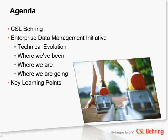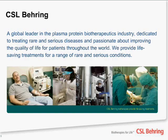CSL Behring is a global leader in our industry — a niche part of the pharmaceutical area where all of our products are made from human plasma, and we use these products to treat rare and serious diseases. What you see depicted in these pictures is actually our supply chain. The gentleman on the left is donating plasma in one of our plasma collection centers, where we then take our product through extensive testing and high-tech purification processes to get it to our patients.